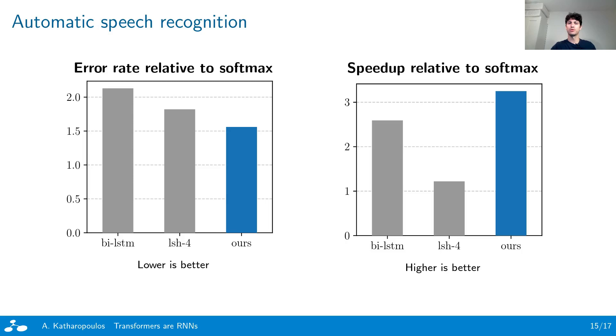Finally, to evaluate the performance of our formulation for the non-autoregressive case, we also train transformers to perform automatic speech recognition on the Wall Street Journal dataset. In this task, given a sequence of acoustic features, we predict a sequence of sub-word units called phonemes. Traditionally, this task is solved with a bidirectional LSTM, thus we also compare with such a baseline.